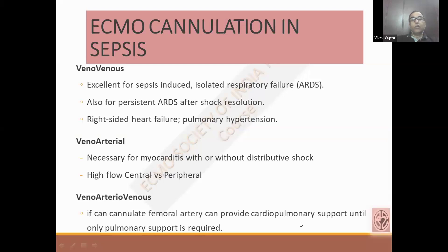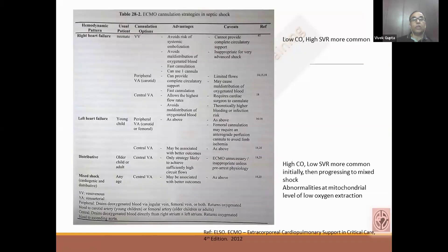Regarding cannulation strategy: for veno-venous ECMO, there is no major problem — for ARDS you do veno-venous cannulation conventionally using femoral-jugular access. If there is right heart failure or pulmonary hypertension, you add an arterial cannula. VA ECMO is necessary for myocarditis without distributive shock. If high flow is needed, then central cannulation; otherwise peripheral VA ECMO using a femoral-venous route may be sufficient. For VVVA, when you require both cardiac and pulmonary support, when myocardial function is recovering along with ARDS, upper body hypoxemia is possible and in those conditions you have to provide VA ECMO support.